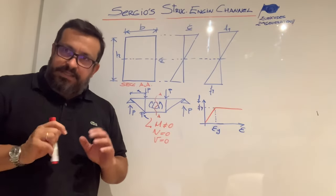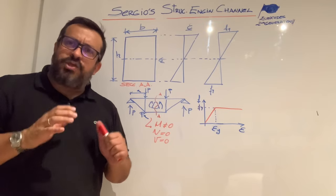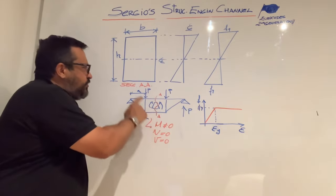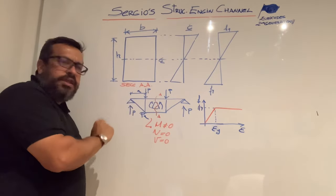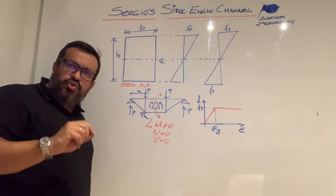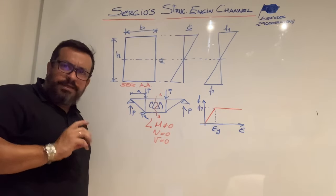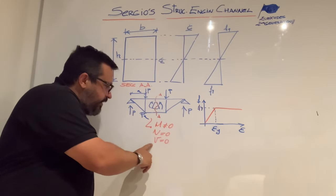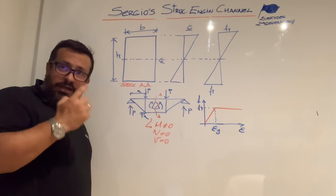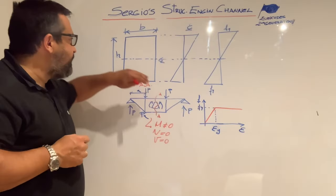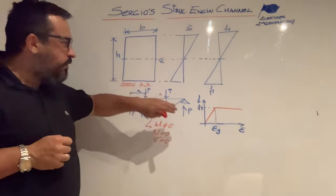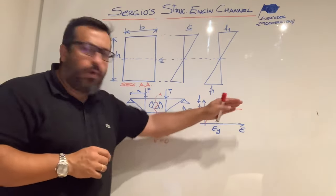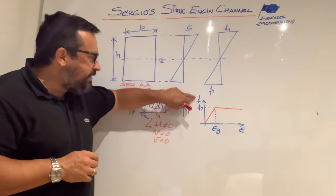In order to complete a bending moment-curvature diagram, we have to assume that we are studying a section called EE, which is subjected only to pure bending moment. That means we don't have axial forces — those are equal to zero — and the shear forces are also equal to zero. Regarding the material that the section is made of, we are going to assume a perfectly elastic-plastic diagram in terms of stress and deformation.